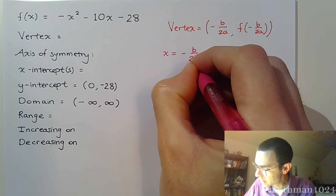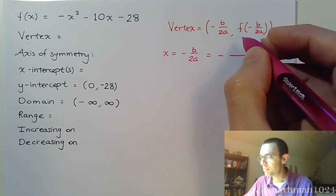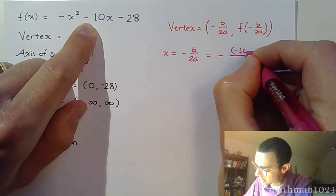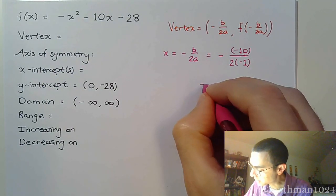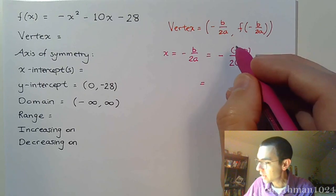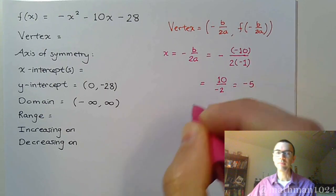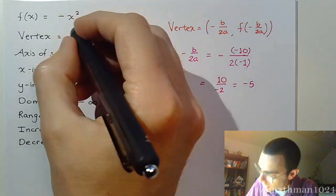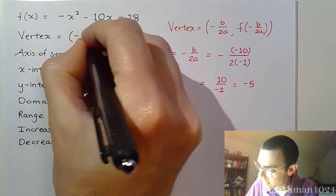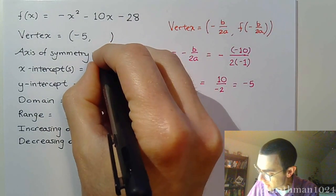So x = -B / 2a. We have a bunch of negatives here: B is -10, and a is -1. That gives us -(-10) / (2 × -1), which is positive 10 over negative 2, equaling negative 5. So x = -5 is our x-coordinate for the vertex, and the axis of symmetry is the vertical line x = -5.